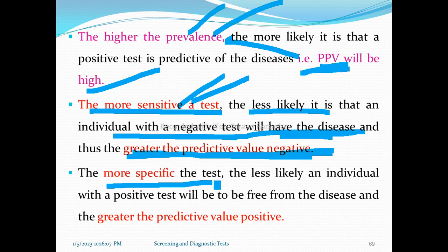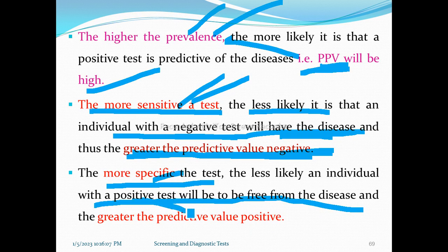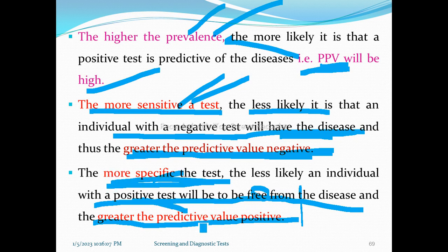The more specific the test, the less likely an individual with a positive test result will be free from the disease. The greater the positive predictive value. The more specific the test, the higher the positive predictive value.